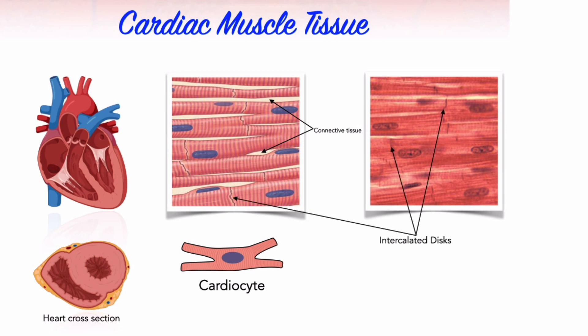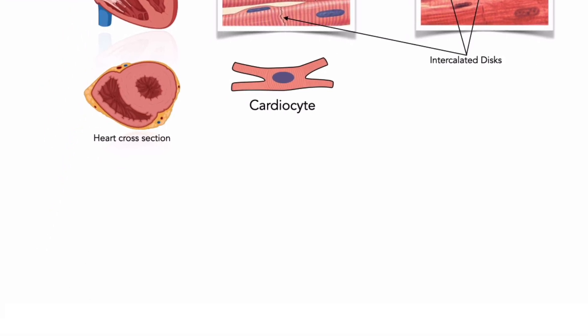These are special attachment sites containing gap junctions and desmosomes. The gap junctions allow for rapid communication between cardiocytes, and the desmosomes provide strong physical connections that allow the tissue to contract as a single unit.